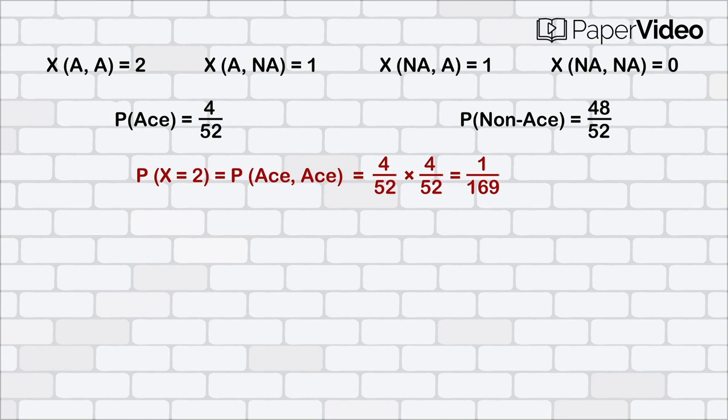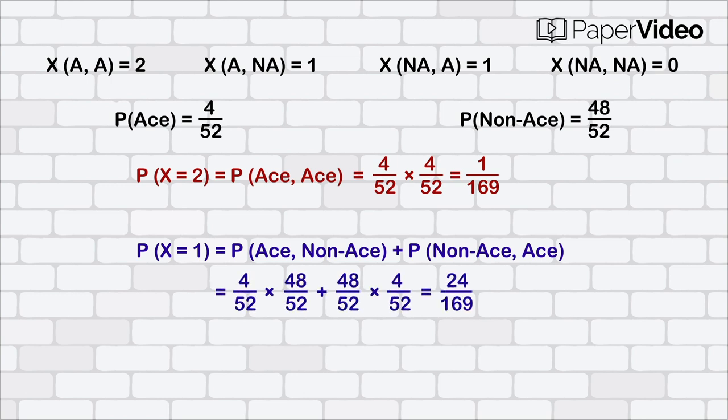Similarly, the probability that X can take up the value 1 is given as P(X = 1) equals to probability of ace, non-ace plus probability of non-ace, ace, which is equal to 4 upon 52 into 48 upon 52 plus 48 upon 52 into 4 upon 52 equals to 24 upon 169.